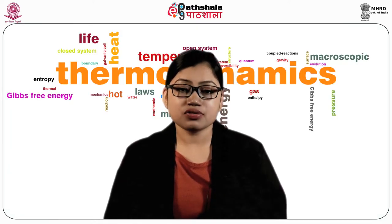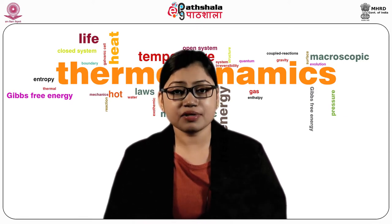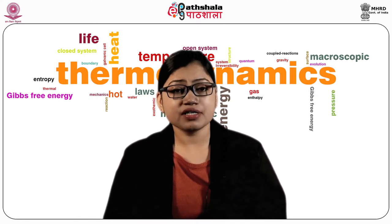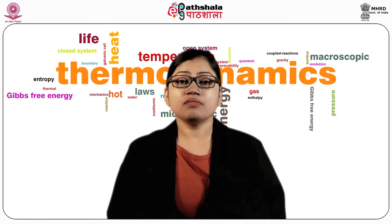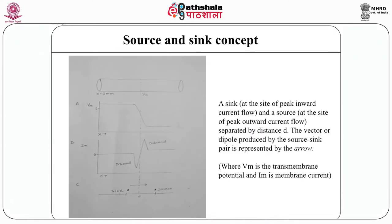Now we are going to talk about the source and sink concept. When an action potential propagates through the muscle, depolarization causes a shift in polarity. When a cardiac fiber is stimulated from point A, the wave of depolarization propagates in the forward direction. The transmembrane potential becomes more positive ahead, while the fiber from point B to A becomes negative due to repolarization. From point B to C, the transmembrane potential becomes positive, and the cycle continues. A sink exists at the site of peak inward current flow and a source at the site of peak outward current flow, separated by distance d. The vector of the dipole produced by the source-sink pair is represented by an arrow.